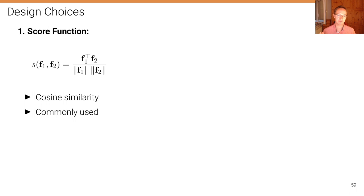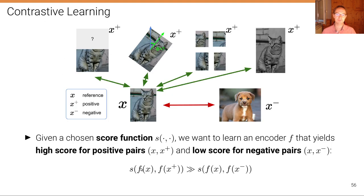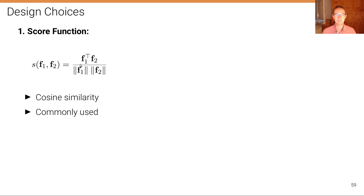The first design choice is the scoring function. There is a feature function that produces a feature vector from an image or patch — it takes an image or augmented view and produces a feature. The most common choice for the scoring function is cosine similarity: the inner product between the features divided by their norm. This architecture is a Siamese network, because the features are computed with the same network from the inputs.